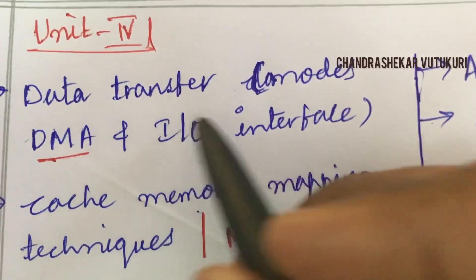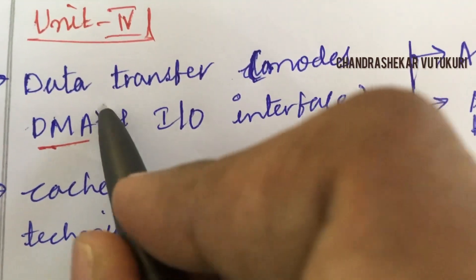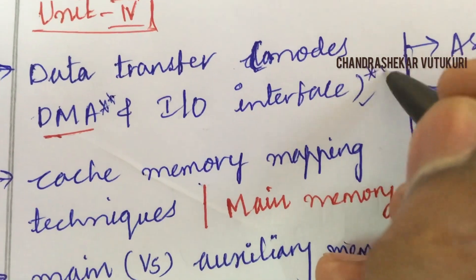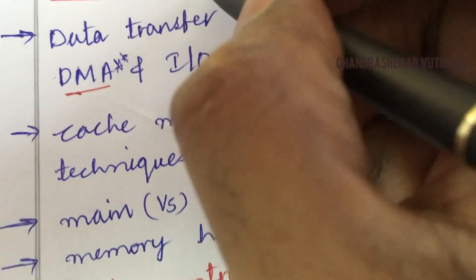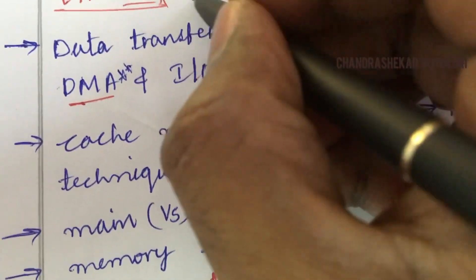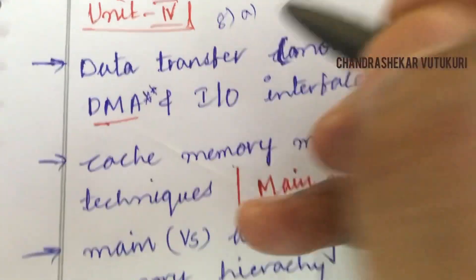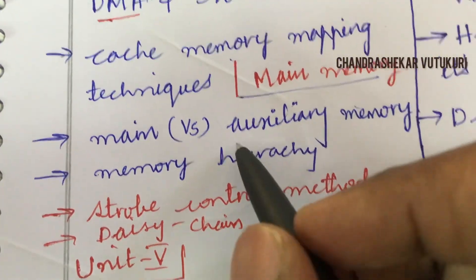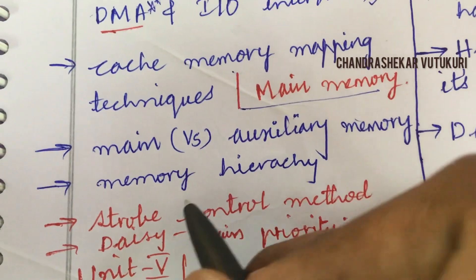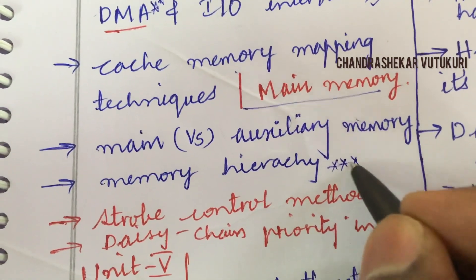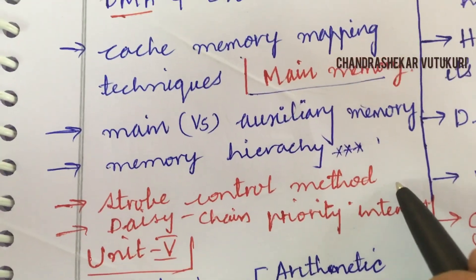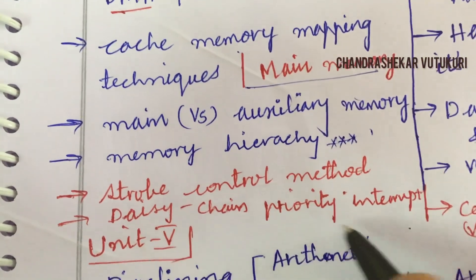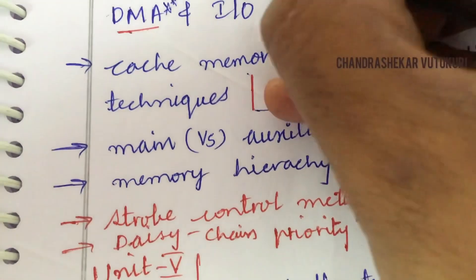Data transfer and the modes of DMA is an important question, and input-output interface is a top question. Cache memory mapping techniques and main memory may be a short question. Main versus auxiliary memory and memory hierarchy is also a top question. Strobe control method, synchronous data transfer, daisy chaining, and priority interrupt may be the B question, all occurring in 8A and 8B.